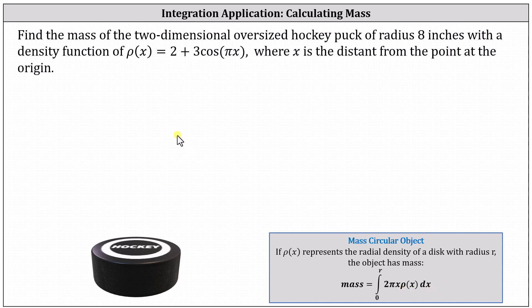equal to the definite integral from zero to r of 2πx·ρ(x) dx, which means in our case, the mass is equal to the definite integral from zero to eight of 2πx times the density function dx.